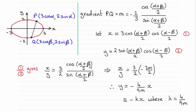And I can pick up by rearranging this equation that the cosine of alpha plus beta over 2 divided by the sine of alpha plus beta over 2 is going to be equal to minus 3M over 2. And so I can substitute that value in there.